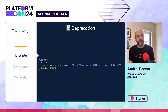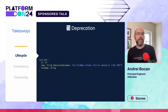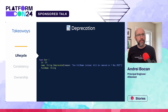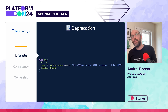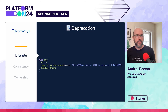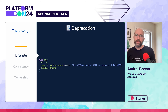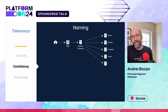Deprecation is pretty straightforward — GraphQL has a built-in annotation for it. The main process change we've added is including the date in our deprecation messages, both to let clients know exactly when changes are going to happen and to ensure teams remember to actually affect those changes.